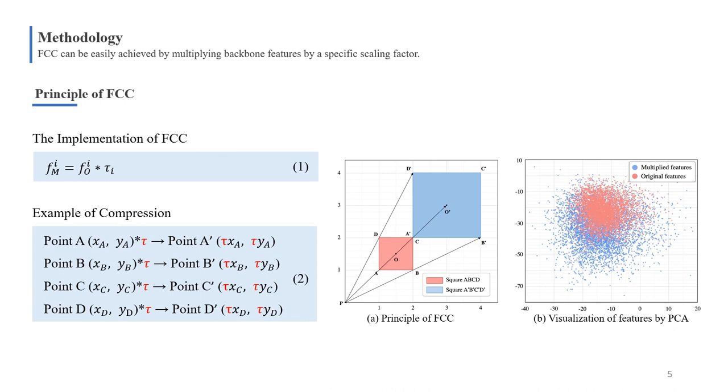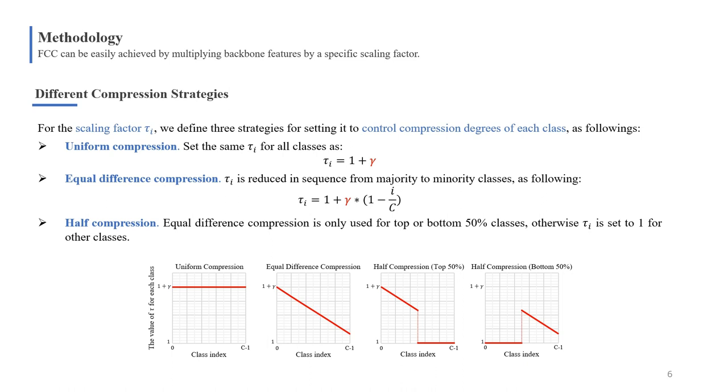For the principle of FCC, here we give a simple case. There is a square ABCD, similar to the original feature clusters. When we multiply the coordinates of points ABCD by a factor τ, the red square will be transferred to the blue square. We can see that the red is compressed relative to the blue. Of course, this principle can also be extended to multidimensional space.